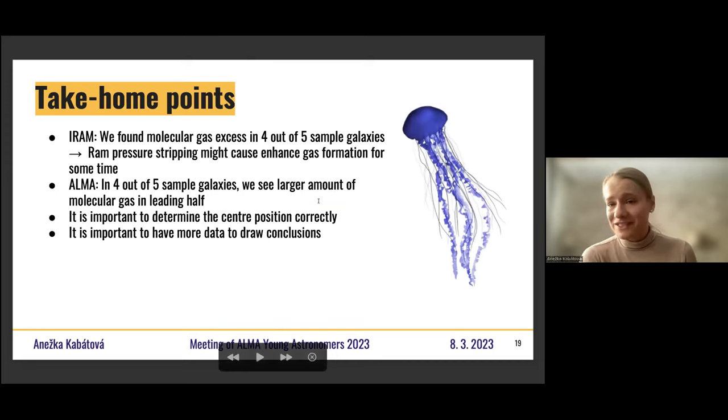So my take-home point is that first we discovered excess in molecular gas in ram pressure stripping galaxies. And then when we kind of looked for the origin of this excess, we find that on the leading half of the stripping galaxies, there is more gas than in the trailing half. That could mean that the ram pressure stripping process itself ignites this conversion from atoms to molecules. So that's all. I'm happy to take questions. Thank you.